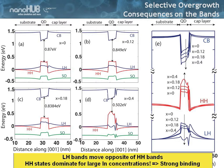So light hole moves opposite of the heavy hole bands and the heavy hole state will dominate for large indium concentrations. That means you have very strong binding. The heavy holes will be strongly bound because they see a deep quantum well and they have a heavy mass. So the ground state of the holes will be strongly confined.